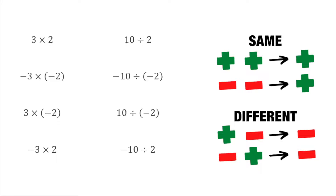One of the key things that we need to remember, which is shown by the diagram on the right, is that if we multiply numbers of the same sign together, then we're going to end up with a positive result. So a positive multiplied or divided by another positive gives us a positive, and also a negative by a negative would also give us a positive. However, if the signs in front of the numbers are different — whether I multiply or divide a positive by a negative, or the other way around, a negative by a positive — that would give me a negative result.